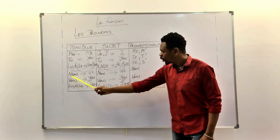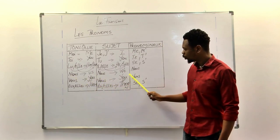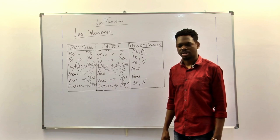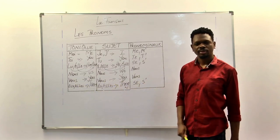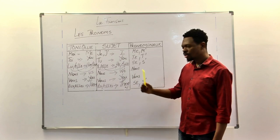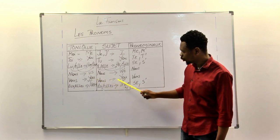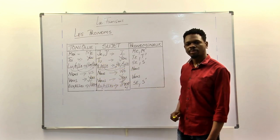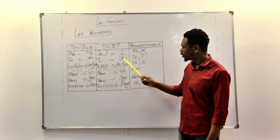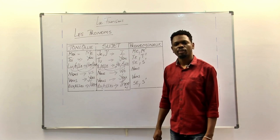You will notice we have nous, nous, nous - same similarities. We have vous, vous, vous. Same as in English, you have 'you.' You have 'you' in the second person singular and 'you' in the second person plural.